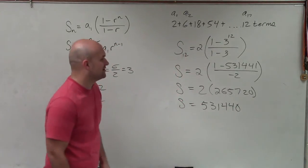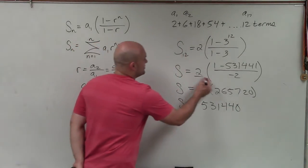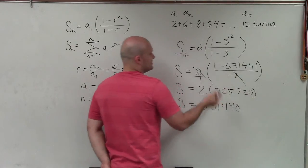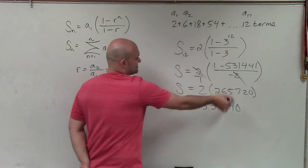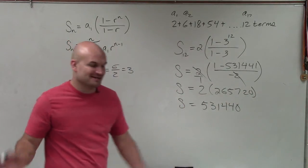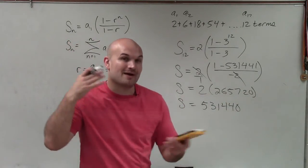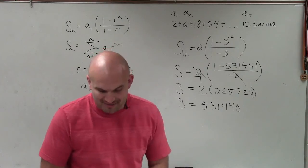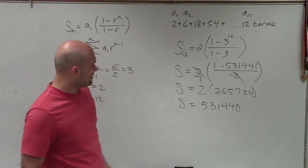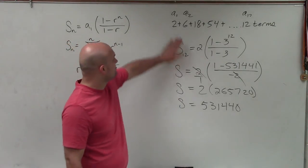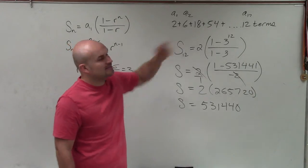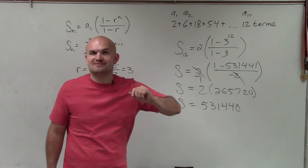Sorry about that — I almost missed it, but you can see the negatives cancel out, which is why the result becomes positive. That doesn't always work out that way. But there you go, ladies and gentlemen — that is the sum for this geometric sequence given 12 terms.